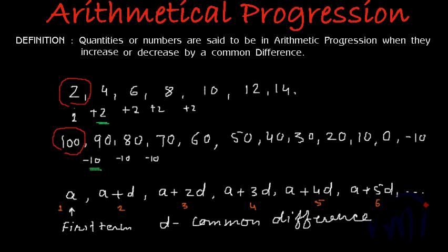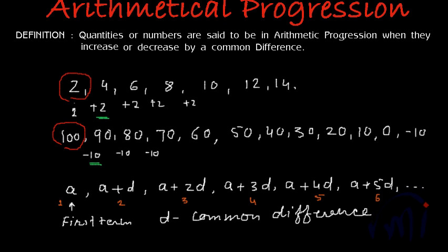So if I write a generalized format for the nth term, tn will be equal to first term plus n minus 1 times d. To find the third term we are adding 2d's to a. To find the fifth term we are adding 4d to a. So if we continue in the same fashion to find the nth term we have to add n minus 1d to a. So this is the generalized form to write any arithmetic progression and this is also a formula to find the nth term of the arithmetic progression.